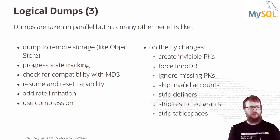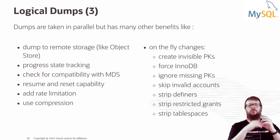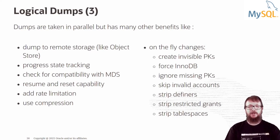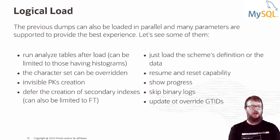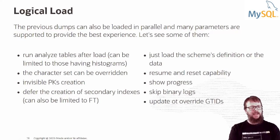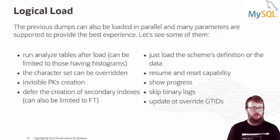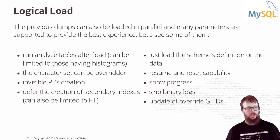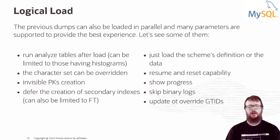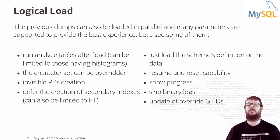When you have done all the dumps, there are three methods to create them but only one method to load — the load dump method — which knows what type of load it has to do from the dump information. Loading is done in parallel with all supporting parameters. For example, you can run analyze tables after loading, or only analyze tables that have histograms. You can change the character set, add missing primary keys at load time, or defer secondary indexes.